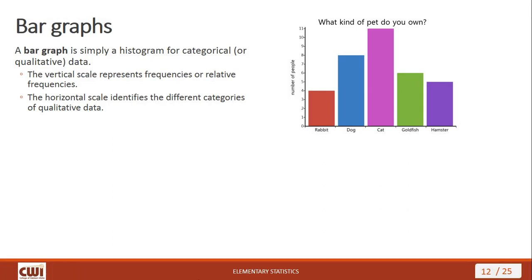Bar graphs are simply histograms for categorical or qualitative data. The vertical scale shows frequencies or relative frequencies, and the horizontal scale identifies different categories. A great example: what kind of pets do you own? Cats come out on top — cats rule because dogs drool! Then you've got a smattering of rabbits, goldfish, and hamsters. We can also make multiple bar graphs by putting two or more sets of bars together on the same plot.